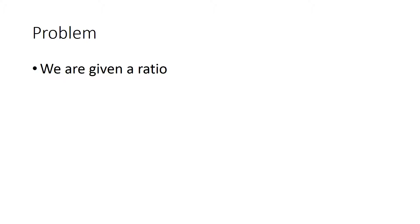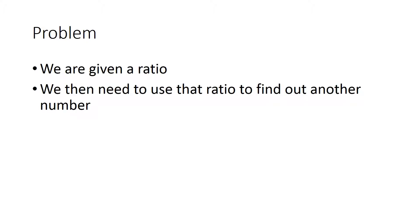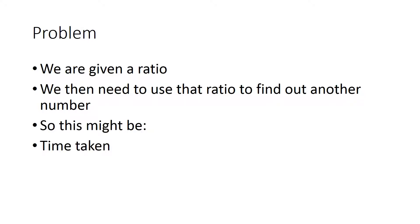So, you've got a maths problem that you've been set in the exam, and you're given a ratio, and you're then going to use that ratio to find out another number. This might be the time taken to get from somewhere, or you're given a speed ratio and the amount of time it takes to get somewhere, or it might be a volume, or you're given a whole set of numbers — like the recipe for a cheesecake — and how much flour you need for a certain number of people.